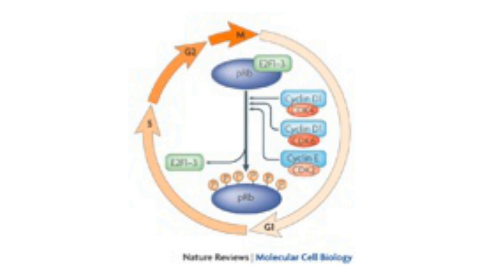One example of how tumour cells do this is by deactivating the retinoblastoma protein, PRB, which acts as a gatekeeper to the cell cycle. PRB normally responds to growth inhibitory signals, but in tumours it is deactivated, rendering it unresponsive. As a result, the cell is allowed to continue through the cell cycle, replicating itself again.